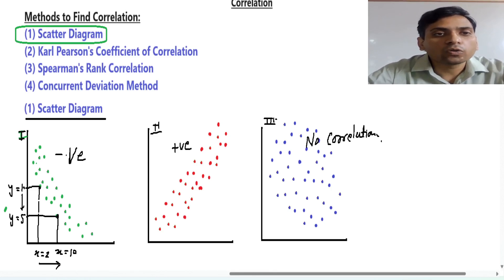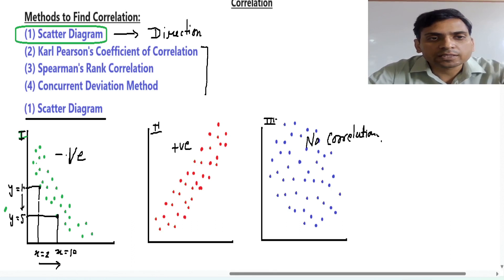Now from this method we will see that a scatter diagram gives only direction. This gives only direction, and other methods, these three methods, give direction and strength.